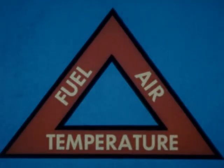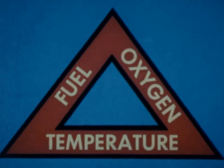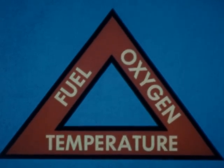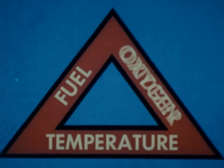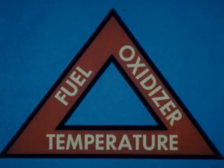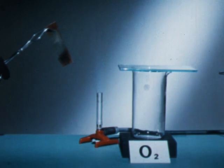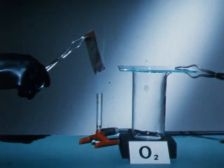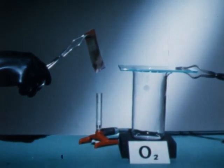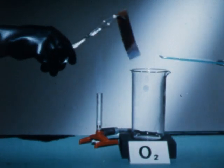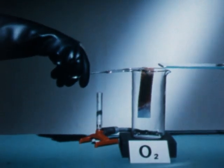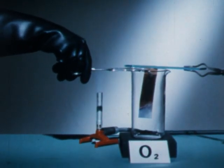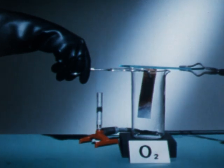Oxygen is the part of air used in combustion. Ordinary combustion uses oxygen as the oxidizer, which combines with the fuel. Combustion is a common, everyday visible example of a chemical change. This experiment shows heated copper burning in oxygen to form cupric oxide.